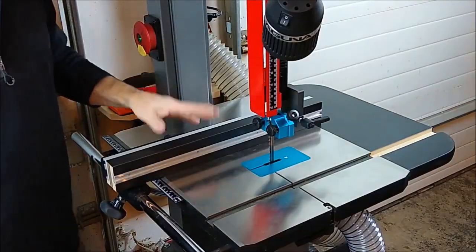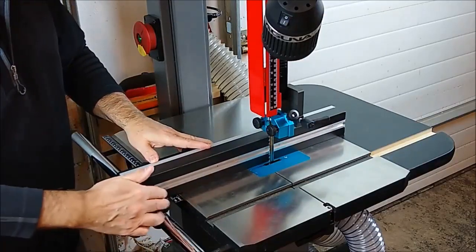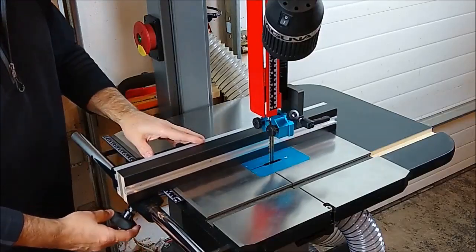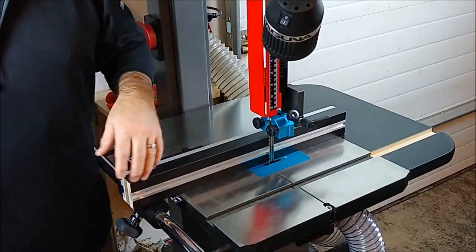So the first mod we're going to look at is this custom everyday fence. It attaches to the same knuckle and fence hardware that came with your saw, and because of that it makes it interchangeable with the tall resaw fence.